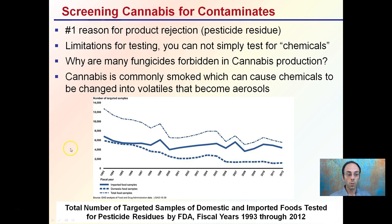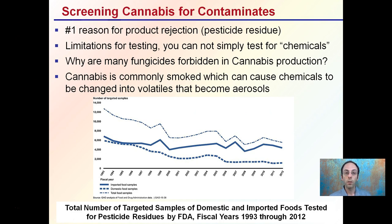Looking at this general graph of total targeted samples of domestic and imported foods tested for pesticide residue by the FDA, you can see that overall testing — even for food items — has gone down due to the sheer volume and difficulty involved. For cannabis, standards are held to a higher level because it's not consumed orally — there's a chance chemicals could be turned into volatiles, which may be more harmful than plain residues. Keep the bigger picture in mind: don't just spray to control pests, but consider long-term implications to ensure your product passes screening and protects the end recipient.